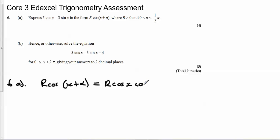This expands to R cos x cos alpha minus R sin x sin alpha. Now if we compare what we've created here to what we're aiming for, you'll see here we've got a cos x and a sin x, and similarly we've got a cos x and a sin x. But whereas we've got a 5 multiplied by the cos x here, we've got an R and a cos alpha. Similarly, we've got a 3 being multiplied by the sin x, and here we've got an R and a sin alpha.